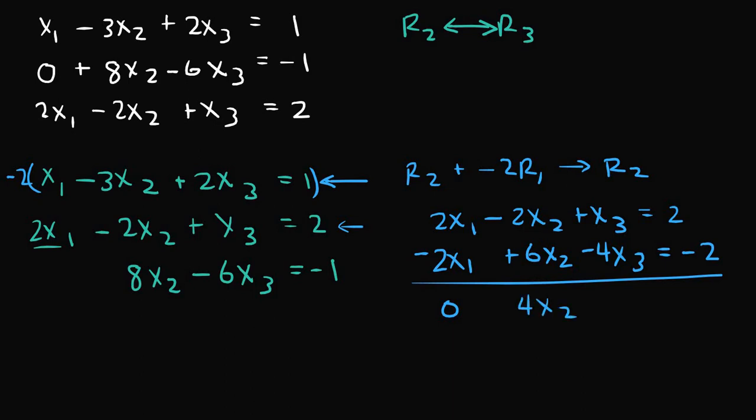negative 2 plus 6 is 4x2, and then x3 plus negative 4x3 is negative 3x3, and that's equal to 2 minus 2 is 0, or 2 plus negative 2 is 0. So this is our new r2.